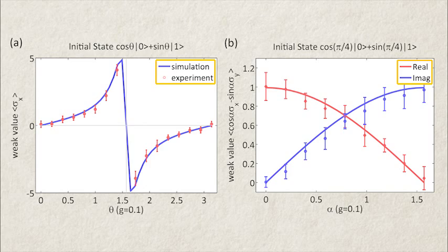We measured complex weak values and weak values outside the range of eigenvalues. Our technique can be used for interesting weak measurement experiments involving more qubits. The relatively large number of qubits that we can manipulate in NMR allow experiments that cannot be done in optics.